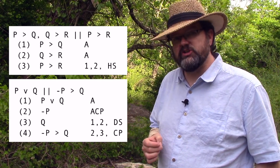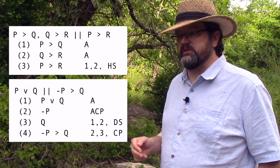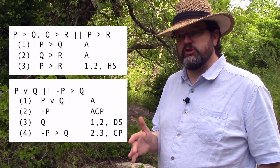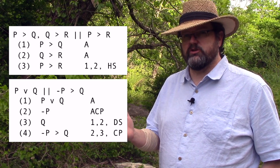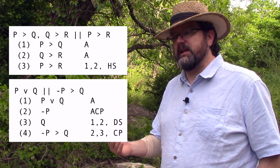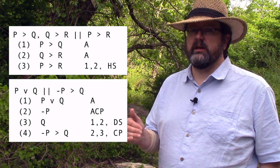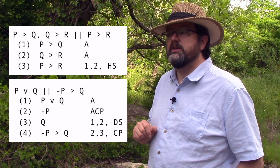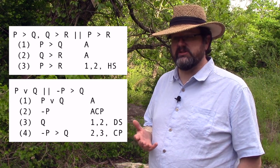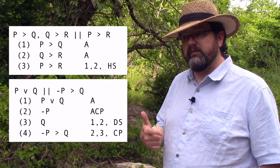We have two rules that allow us to infer conditionals. Modus ponens and modus tollens don't allow us to infer a conditional — they allow us to infer either the consequent of a conditional given the antecedent, or the negation of the antecedent given the negation of the consequent. Hypothetical syllogism and conditional proof allow us to infer conditionals. So if your conclusion is a conditional, there's a chance you might need to use hypothetical syllogism or conditional proof.